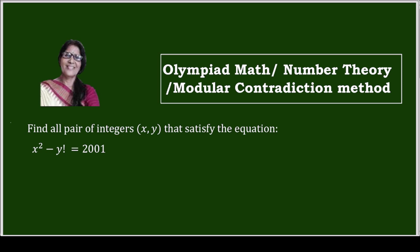You have to prove that equation where factorial is involved. Question is find all pairs of integers x and y that satisfy the equation x squared minus y factorial equals to 2001.